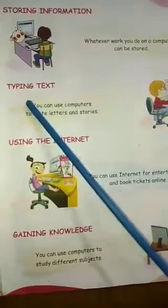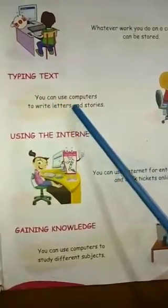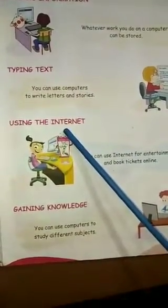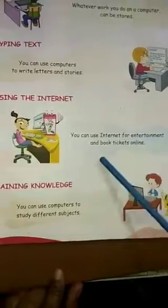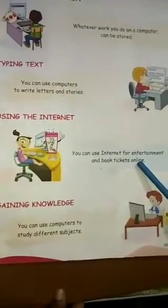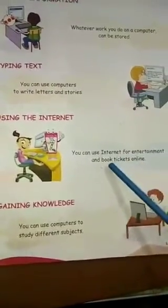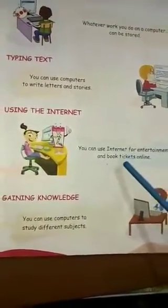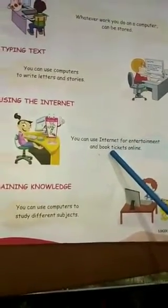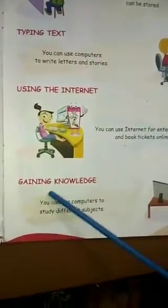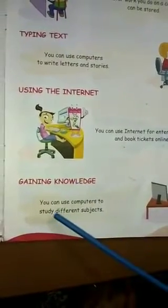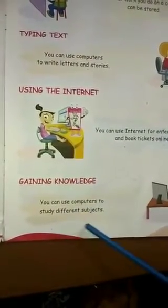Next, typing text: you can use computers to write letters and stories. Using the internet: you can use the internet for entertainment and book tickets online. We use mobile internet for booking tickets online. For various entertainment you use the computers. Next is gaining knowledge: you can use computers to study different subjects.